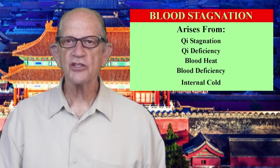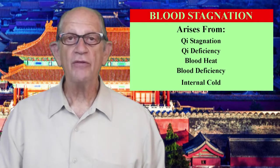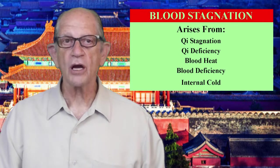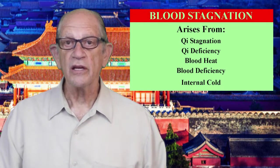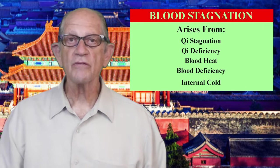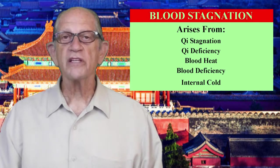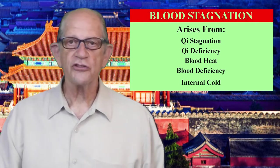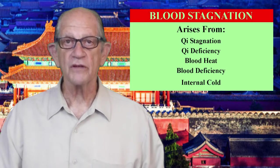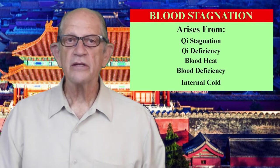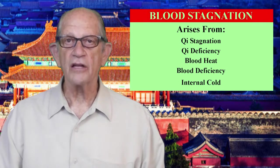We will start with blood excess conditions. The first is blood stagnation. Blood stagnation signs and symptoms can come from five separate syndromes. The first is qi stagnation, which is the most common. Qi is the commander of blood — if qi stagnates, blood will eventually stagnate. The second is qi deficiency. If qi is too weak to move, again qi stagnates, and if qi stagnates, blood will eventually stagnate. The third is blood heat. Heat in the blood may cause the blood to congeal and stagnate.